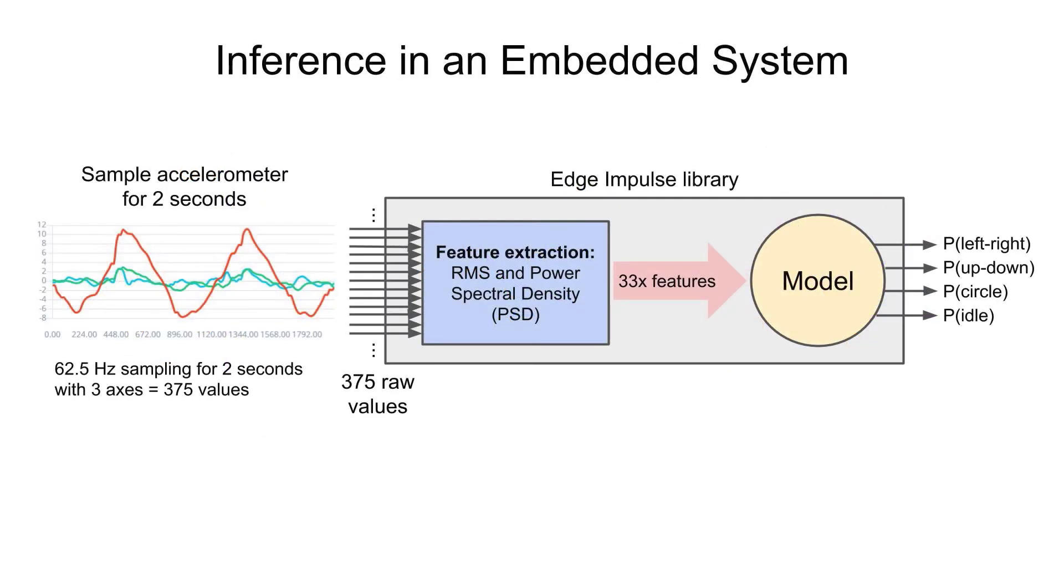Once we had a fully trained model in Edge Impulse, we could then deploy it to our microcontroller. Luckily, Edge Impulse converts the model and wraps it in a library, which makes it easier to use in an embedded system. Once loaded on our phone or microcontroller, the system would read raw accelerometer data, extract the features that we specified, and then perform inference with our trained model, giving us probabilities for each label.